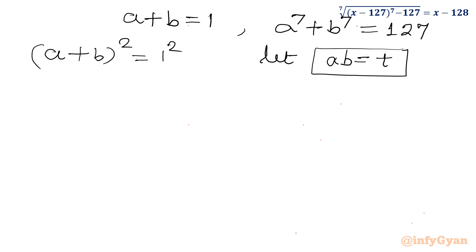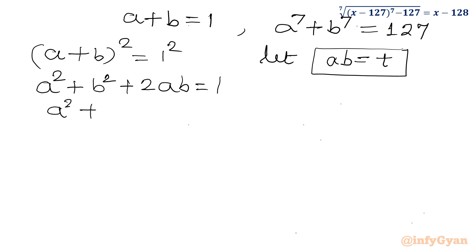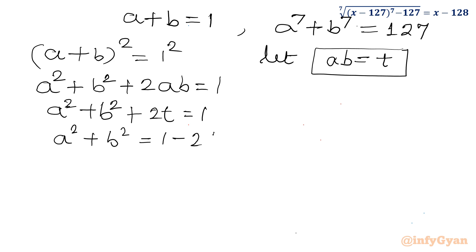Let us consider ab equal to t. Applying a plus b whole square: a square plus b square plus 2ab equals 1. So a square plus b square plus 2t equals 1, or a square plus b square equals 1 minus 2t. Now I have to figure out a power 7 plus b power 7.